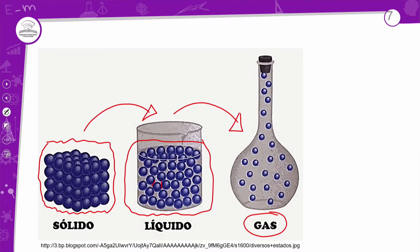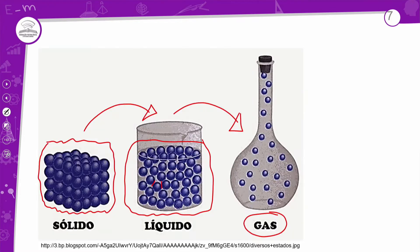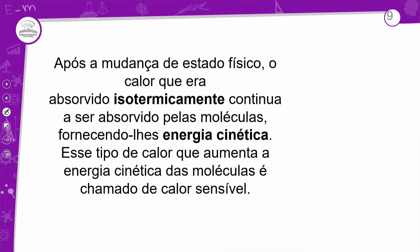O calor sensível geralmente dá um resultado menor, dependendo da variação de temperatura. A partir do instante que o sistema termodinâmico absorve toda a energia necessária para desagregar suas moléculas, dá uma desorganizada — a interação entre elas diminui, indicando que o seu estado de agregação mudou. Isso acontece daqui para cá: mudou o estado de agregação. Pode-se resfriar? Lógico — só vai ser o caminho inverso: em vez de ser positivo, vai ser negativo.